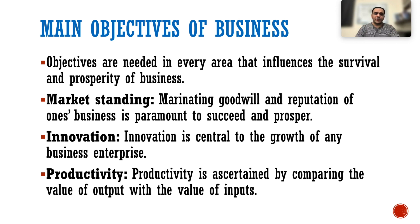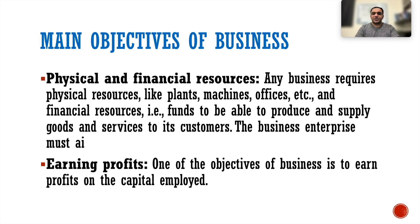Innovation ensures your product is always in demand, and good productivity means you will never be out of stock. Physical and financial resources are also key objectives — any business requires physical resources like plants, machines and office equipment, and financial resources like funds to produce and supply goods and services. Earning profit on the capital employed — the money invested in the business — is another major objective.